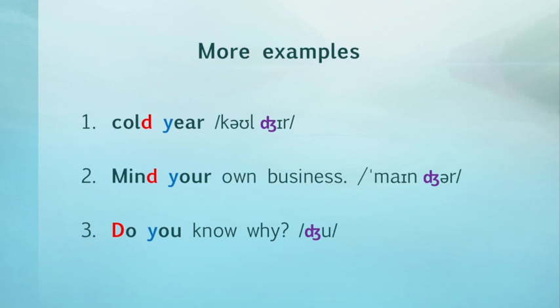A couple of notes. On number two, the phrase mind your own business is another English saying that means respect people's privacy, it's a request. And number three, you might have noticed that the first word doesn't end in a d, it ends in an oo sound, do. But the reason why coalescence happens here is because the word do in connected speech often gets reduced to just a d sound. So in connected speech, do you ends up just sounding like ju.